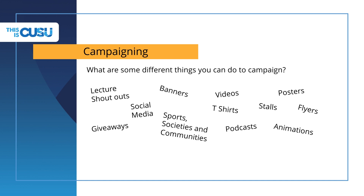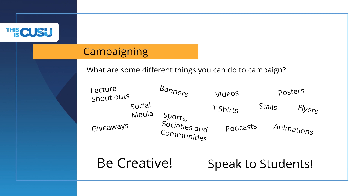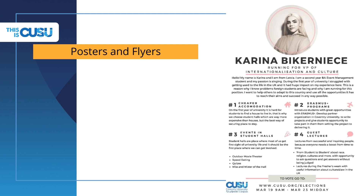Banners are a great idea, as are videos, posters, using social media, t-shirts, stalls, flyers, giveaways, getting a sports society or community to endorse you. You could even use podcasts, radio or animations. The most important bit of all campaigning is to be creative. Your campaign needs to offer something different from everyone else's so you're the person that sticks in the mind of the voters. And the best campaigning method will always be to speak to students — there is no substitute for hard work and getting that human contact.